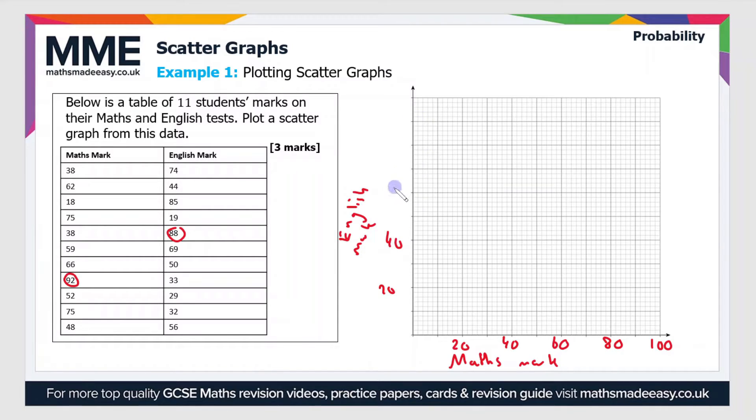The next thing we have to do is plot the points. For a maths mark of 38 there's an English mark of 74, so if we go to 38 on the maths mark and then up to 74, the point should be about there. Then for 62 on the maths mark and English mark of 44, we go to 62 and then up to 44, so the next point is there.